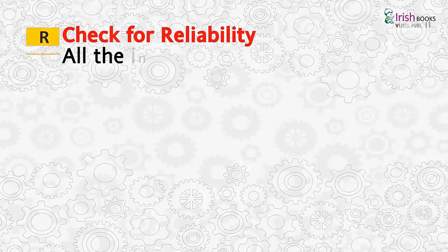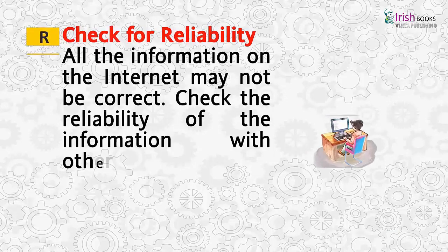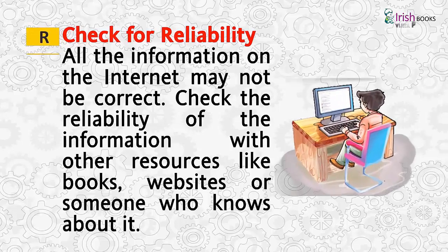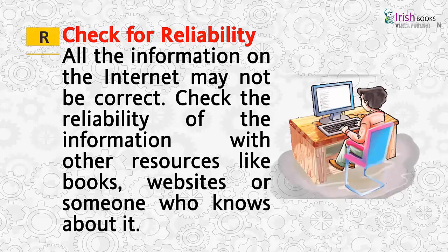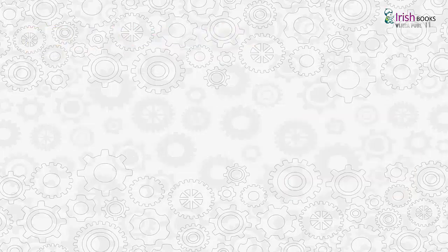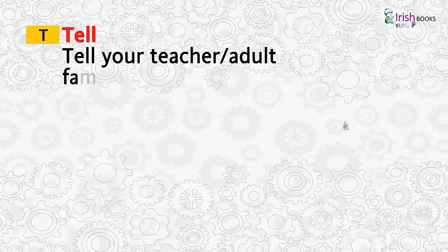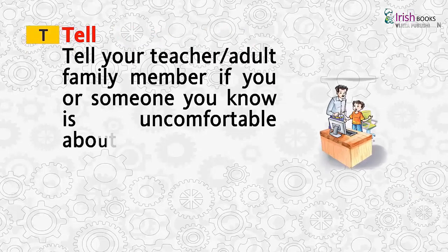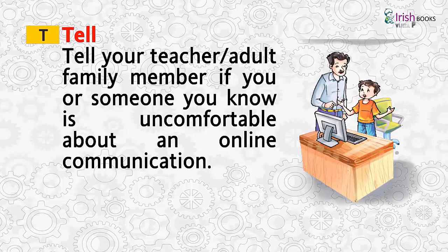R: Reliability — check for reliability. All information on the internet may not be correct; check the reliability of information with other resources like books, websites, or someone who knows about it. T: Tell — tell your teacher or an adult family member if you or someone you know is uncomfortable about an online communication.